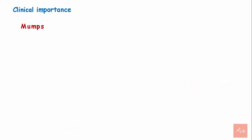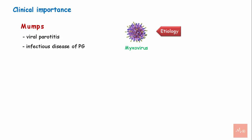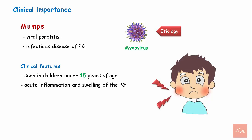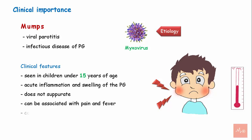Regarding clinical importance — Mumps, also called viral parotiditis, is an infectious disease of the parotid gland caused by the myxovirus. It is seen clinically in children under 15 years of age. There is acute inflammation and swelling of the parotid gland with no suppuration, but it can be associated with pain and fever. Complications include orchitis and pancreatitis.